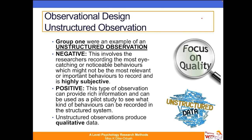Group one used an example of an unstructured observation. The negative is that the amount of information to capture is overwhelming and it's highly subjective — you didn't know what was important behaviour to record. However, the positive is that this type of observation can provide rich information, and you can use it as a pilot study to see what kinds of behaviours can be recorded in a structured system. Unstructured observations produce qualitative, non-numerical data.